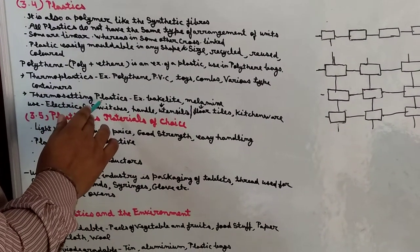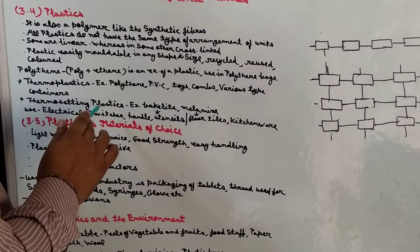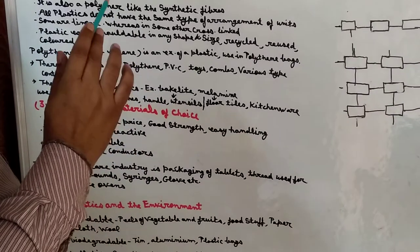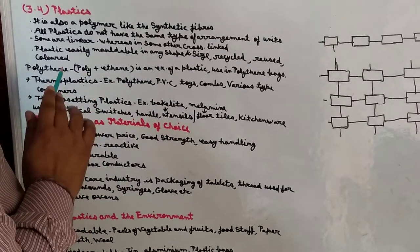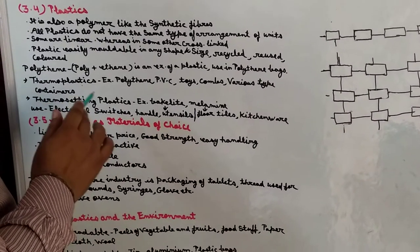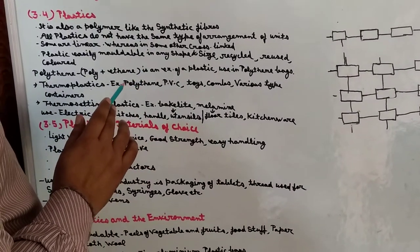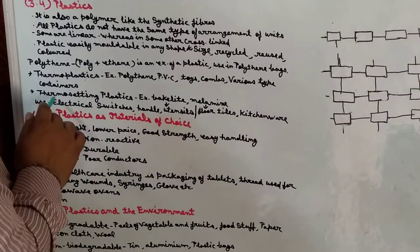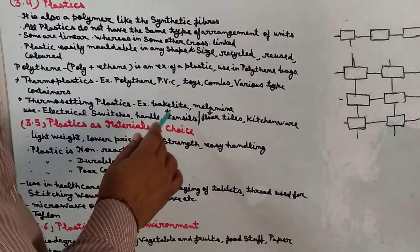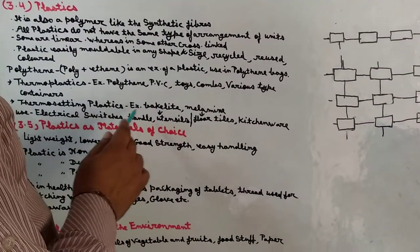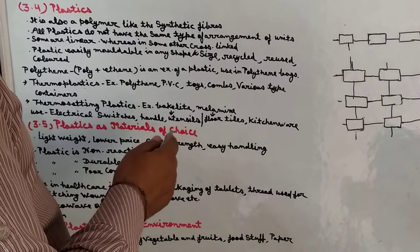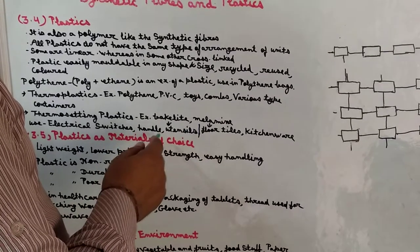Thermosetting plastic इसके opposite है. इनको एक बार mold होने के पश्चात यदि दुबारा remold किया जाए तो ये remold नहीं होते. जिस shape और size में convert हो जाते हैं वो final होता है. जैसे electric switches को heat करेंगे तो ये burn हो जाएंगे, किसी shape में convert नहीं हो सकते. Thermosetting plastic से electric switches बनते हैं mostly, और press handle या दूसरी चीज़ों में handle के रूप में bakelite का use किया जाता है.